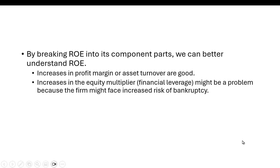By breaking it down, we get an idea of what's happening to return on equity — why did it go up, why did it go down? Increases in profit margin are good. Increases in asset turnover are good — that's a measure of efficiency. But increases in the equity multiplier or financial leverage might be a problem and might be an indication that the firm is increasing its risk of bankruptcy.